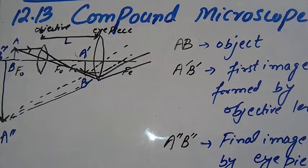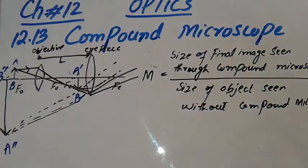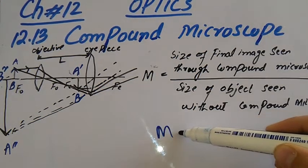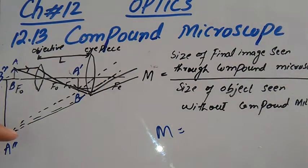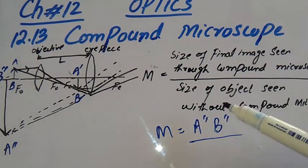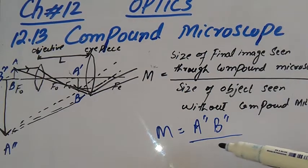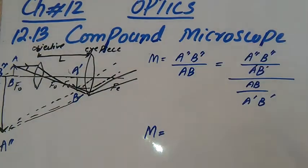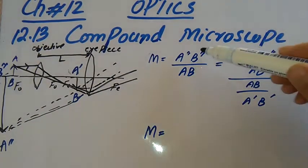Now we will write the magnification formula, which is equal to the size of the final image seen through the compound microscope — that is A''B'' — divided by the size of the object seen without the microscope, which is AB.